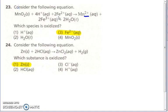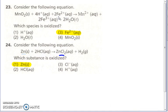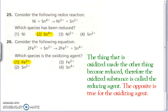Number 24 — which one is oxidized? Zinc goes from a zero to a plus two. Get rid of anything on the product side. Zinc is changing; H⁺ is not changing. So the thing that is oxidized and makes the other things become reduced — we call that the oxidized substance a reducing agent. Number 25 — which one's reduced? It's got to be something from the reactive side. The Sn goes from a plus four down to a plus two, so it's reduced.